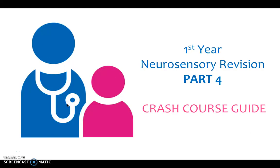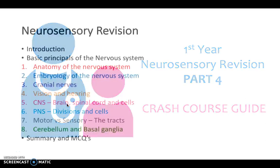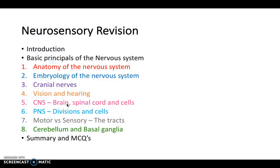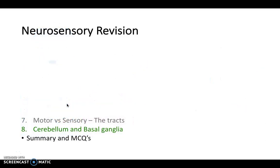Hello and welcome back to Crash Course. Today we're going to be looking at the final part of the neurosensory system. This will involve us taking a look at the motor and sensory tracts, as well as the cerebellum and basal ganglia in some detail, and finishing off with a summary and some MCQs.